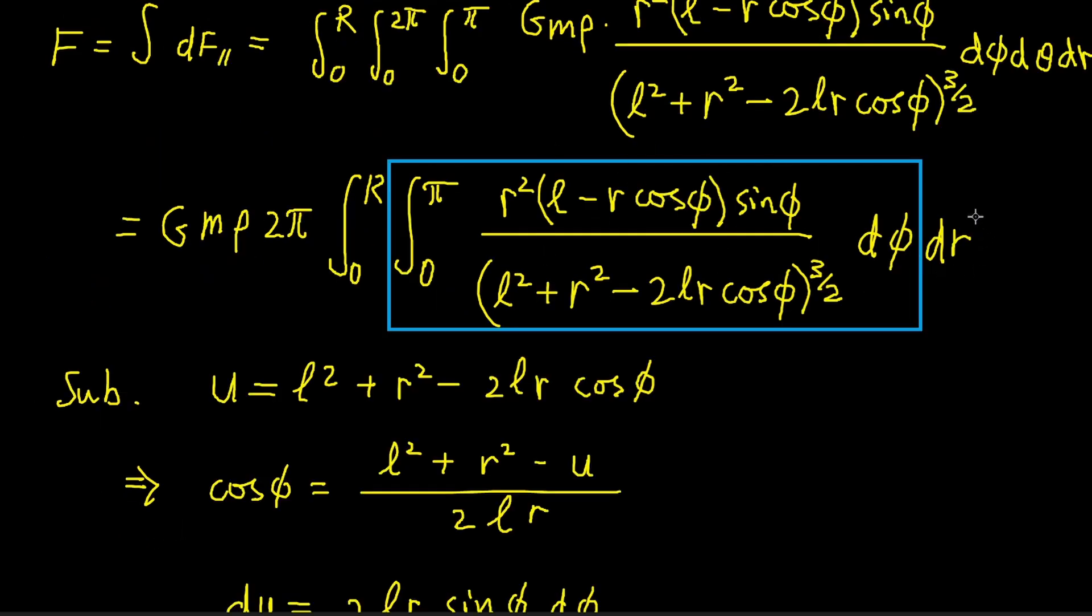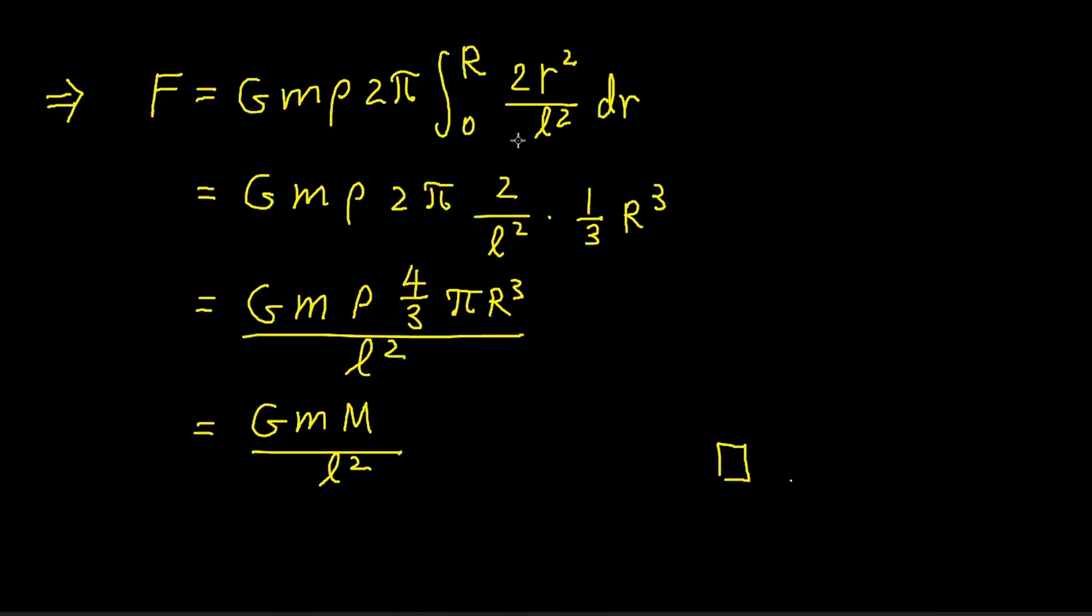Just one more integration with respect to r, and we're done. The final integration is also very simple. And we get G times m times ρ times 4/3 π r³ divided by L².